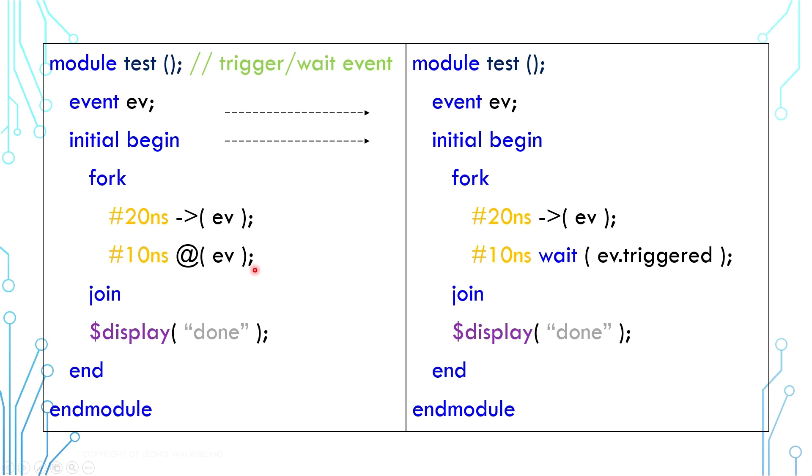This is the same as before except that blocking happens first and event trigger happens later. As a result the blocking will see the trigger and complete, and the join statement will happen, and the display will happen.